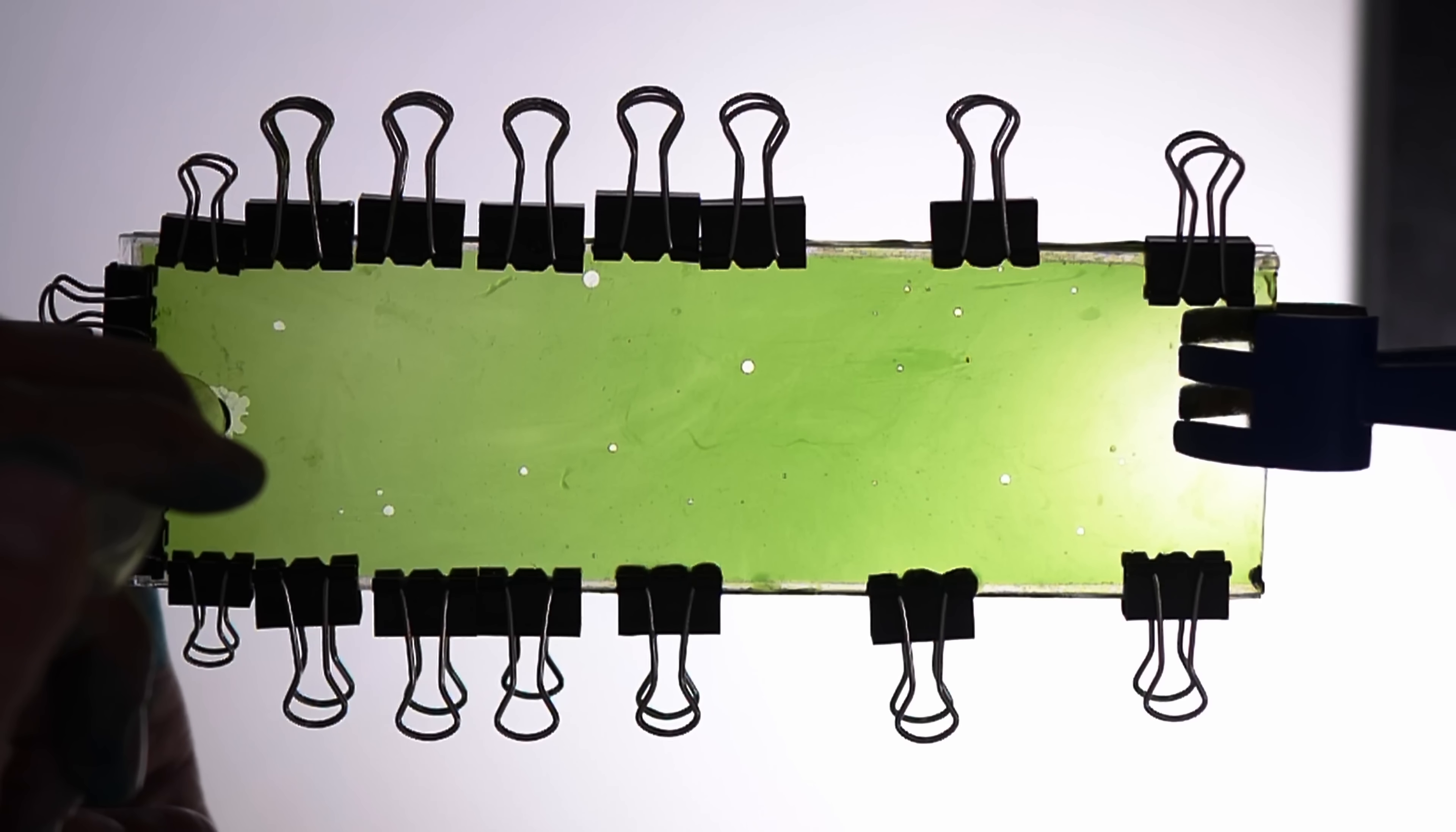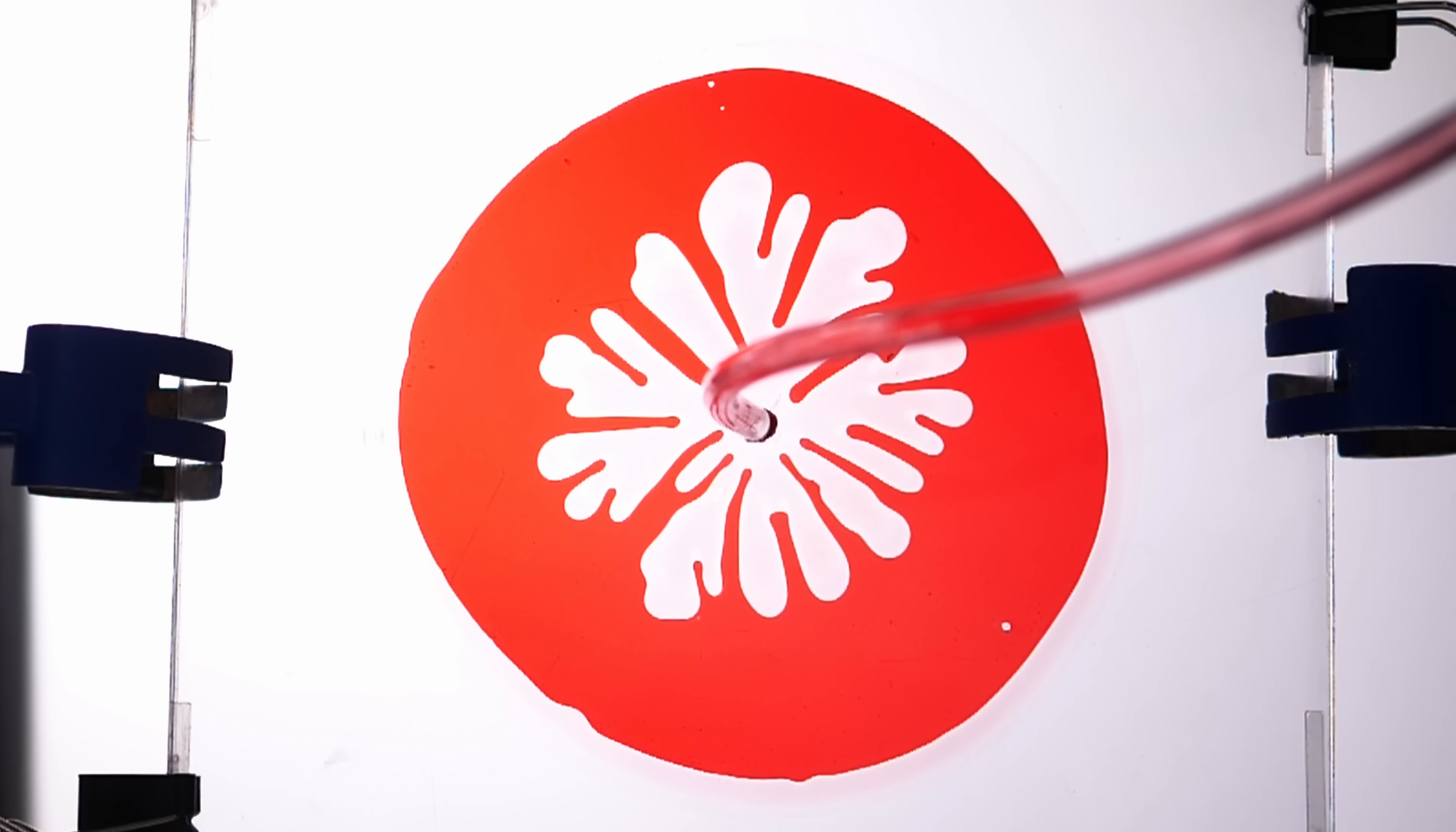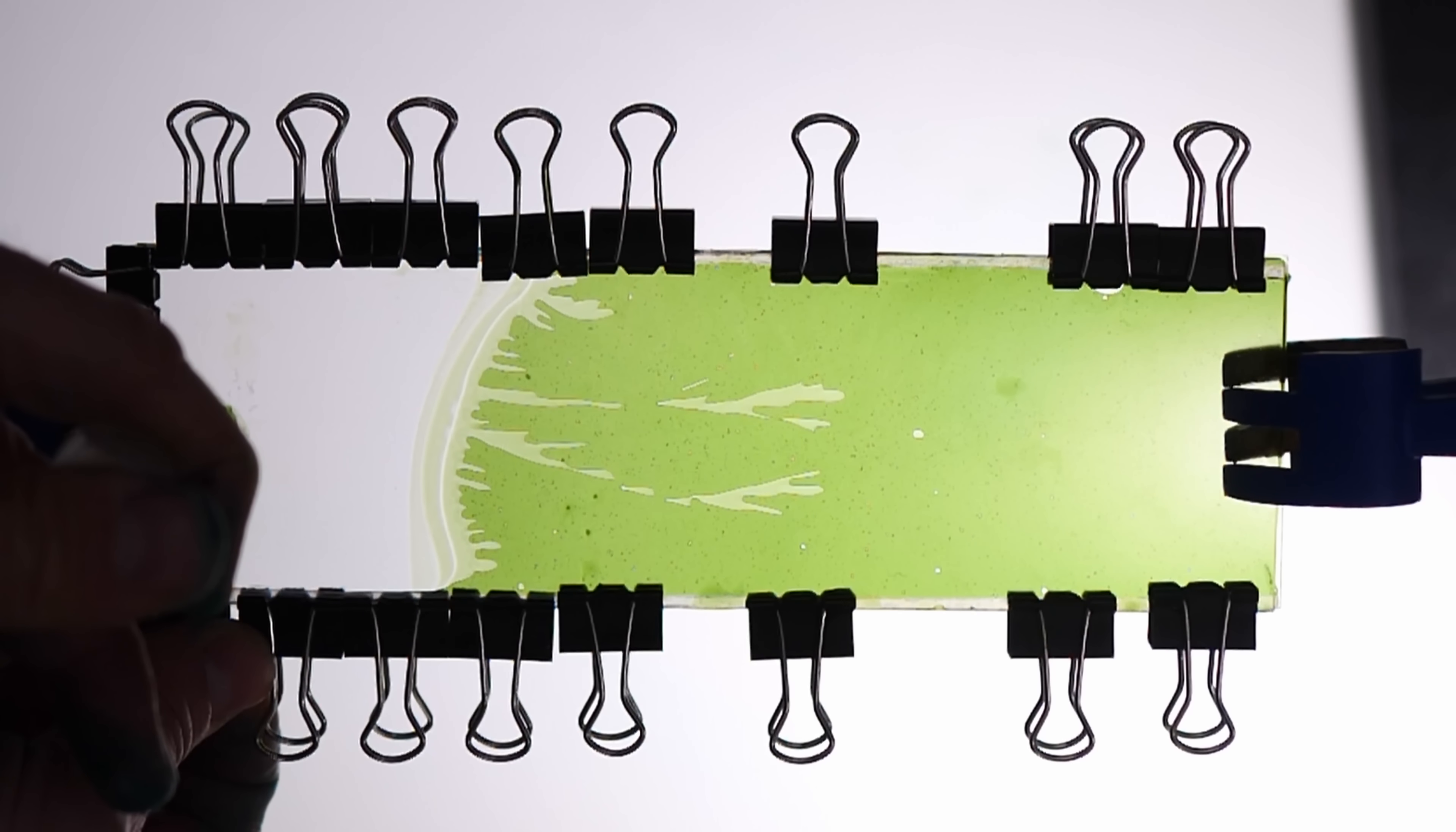The proper name for this behavior is Saffman-Taylor instability. It's an instability because a smooth boundary between the two fluids is unstable—it will tend to spontaneously become unsmooth. The reason it's called viscous fingering is because the instability only appears when you try to push a less viscous fluid into a more viscous fluid. I'm just going to say thin and thick from now on instead of less viscous and more viscous. But anyway, that's why all of these tests created a fractal pattern, but the reverse of those tests didn't. It only works when the thinner fluid is invading the thicker fluid.